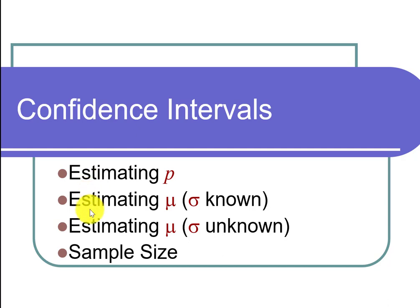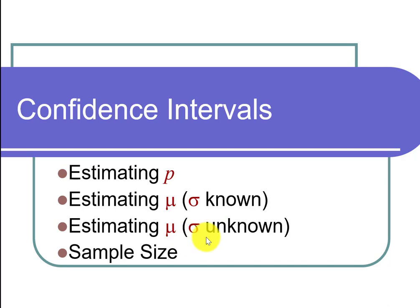Then we'll do the same idea for the population mean. So if we conduct a quantitative study and we have a sample mean, that's an estimate for the population mean. The big question is how good an estimate is it — how far off might we be up or down? We'll start by talking about when you happen to know the population standard deviation, and then move on to when you don't, which in the real world is pretty much always the case.